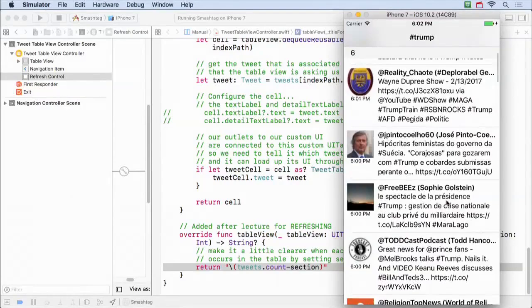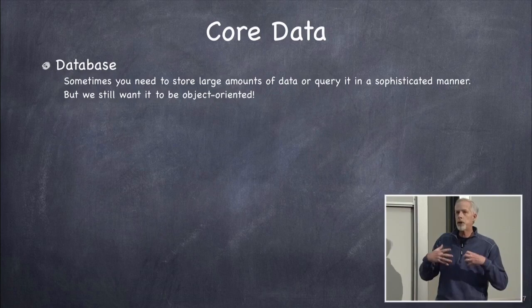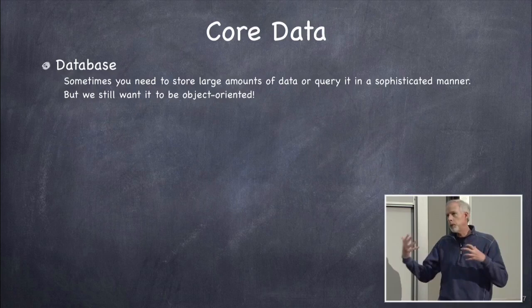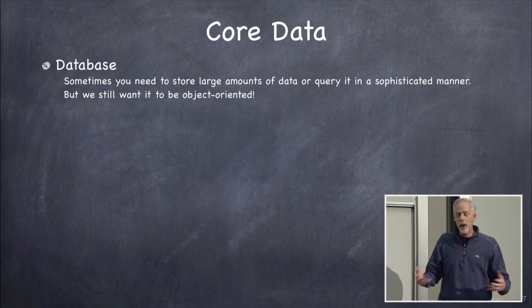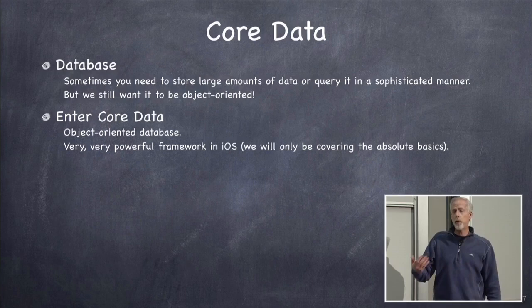Let's go back to our slides. CoreData is a big framework inside iOS for doing object-oriented databases. When do you need a database? You need one when you have a large amount of data, especially if you want to make queries and find out about relationships between things. You really can't do that with just a big dictionary or array — you need a database.